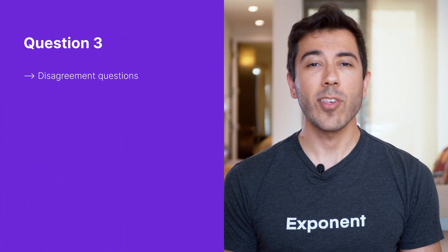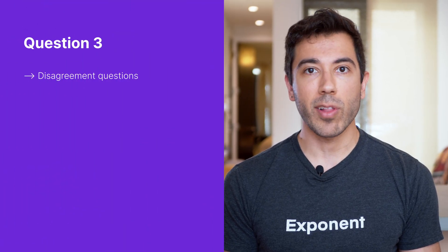Number three: disagreement questions. These questions might look like: tell me about a time that you had a disagreement with your manager, or tell me about a time when you were working cross-functionally with a product manager or a designer and you had a disagreement. In these interview questions, your interviewer is assessing your capacity for conflict and being able to navigate conflict, which is a necessary part of any engineering job.